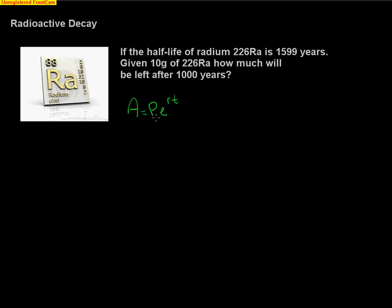A is your amount after, P is your principal or initial start, r is your rate as a decimal, t is time. We know that with half-life, if I start with an initial amount, then A can be changed to half of that initial amount.